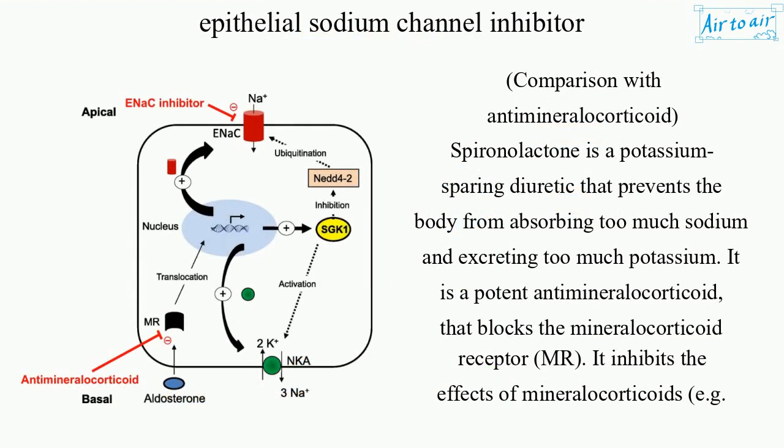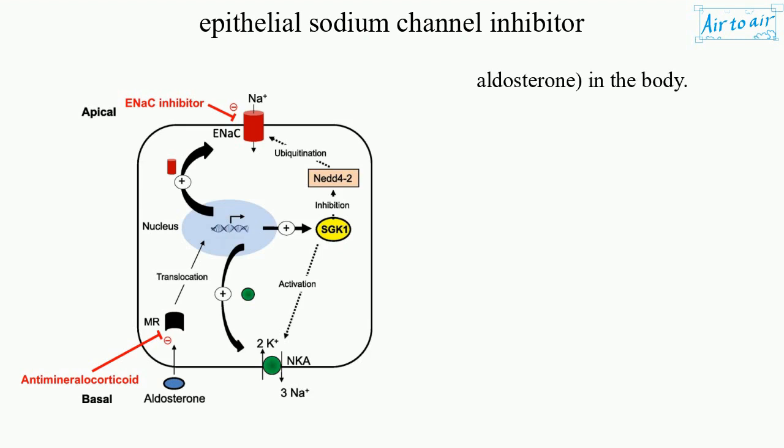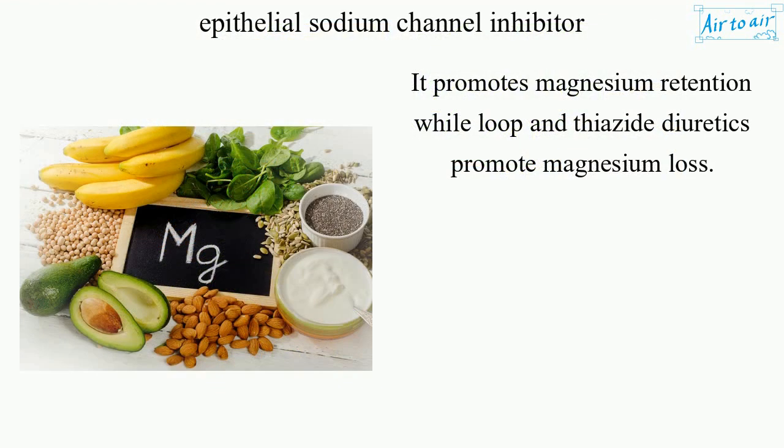Comparison with antimineralocorticoids: spironolactone is a potassium-sparing diuretic that prevents the body from absorbing too much sodium and excreting too much potassium. It is a potent antimineralocorticoid that blocks the mineralocorticoid receptor (MR), inhibiting the effects of mineralocorticoids, e.g. aldosterone, in the body. It promotes magnesium retention, while loop/thiazide diuretics promote magnesium loss.